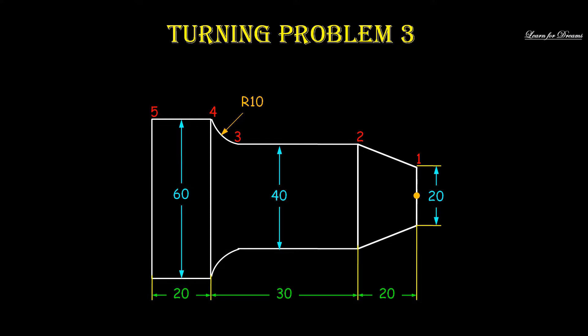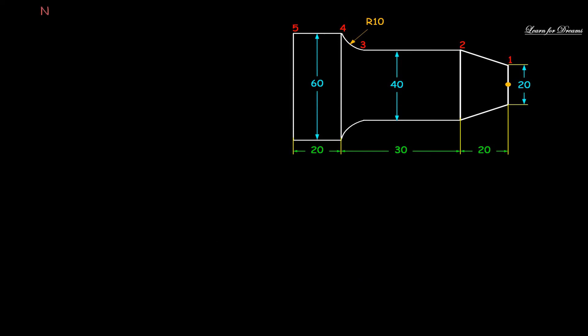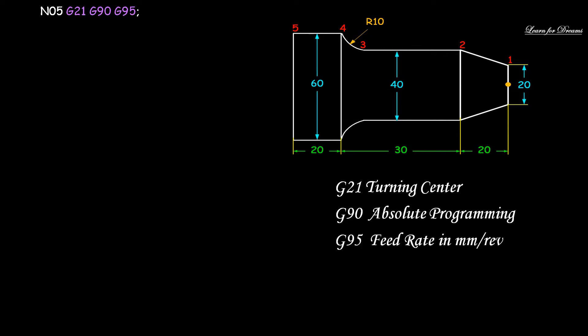So this is the given design. Let's see the actual program. N05 G21 G90 G95. Here N05 is a block number, you can do block numbering as you wish. G21 is turning center, G90 is absolute programming, G95 is feed rate in mm per revolution.